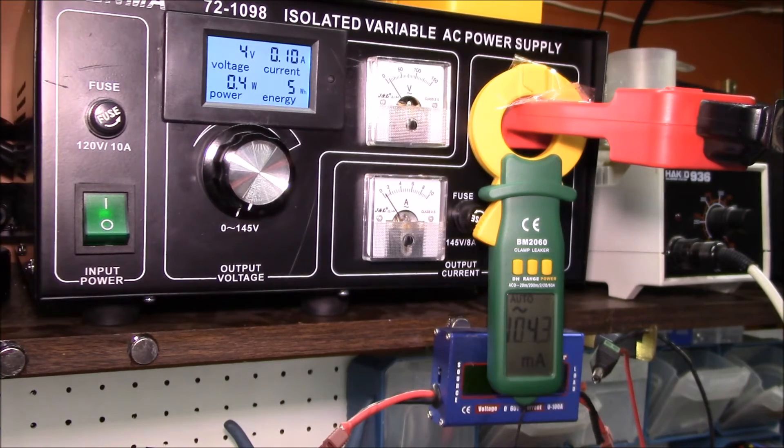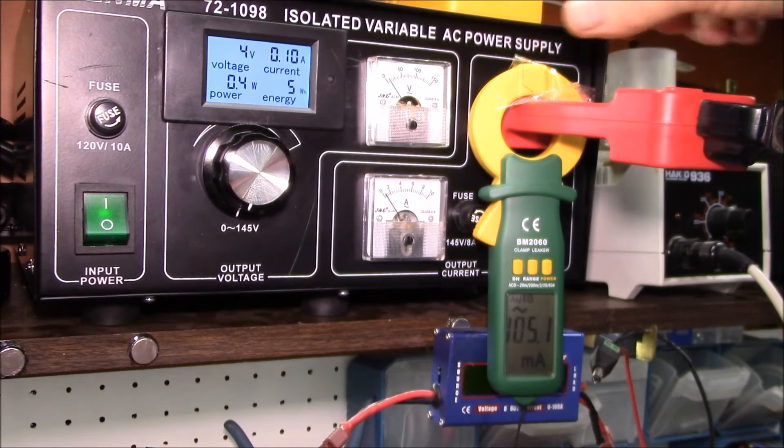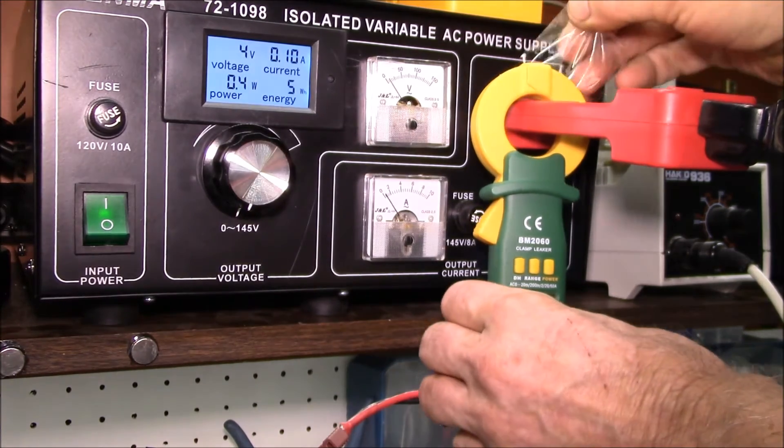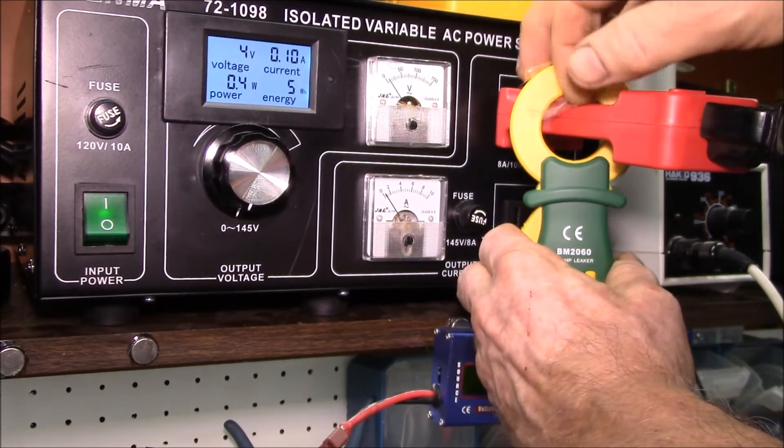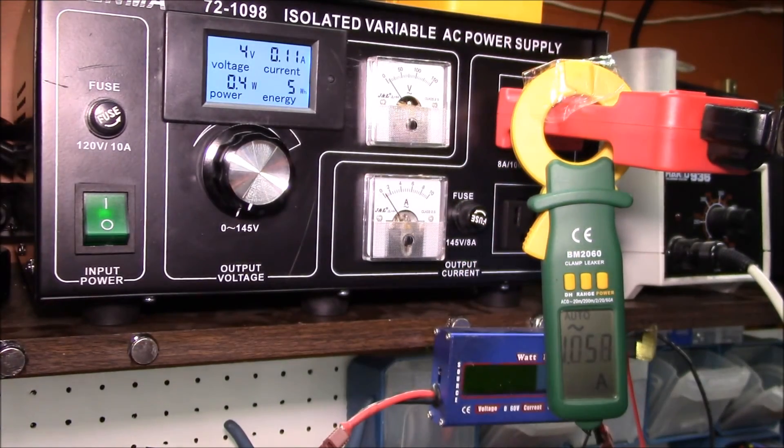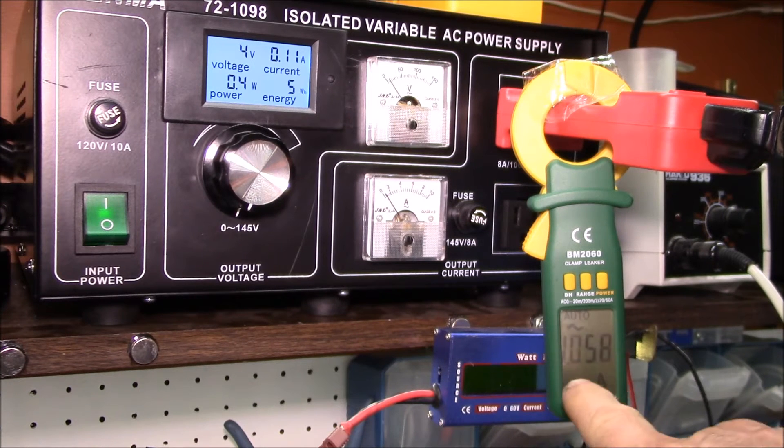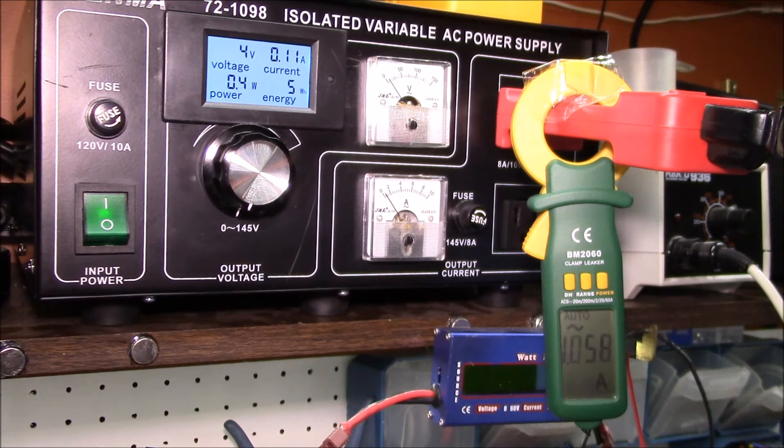Just for grins, we can switch over to the x10 reading. This multiplies the reading by 10, so this one is showing about 106 milliamps. The meter's reading 1.06, but you have to divide that by 10. It looks like it's within half a digit on the low end.